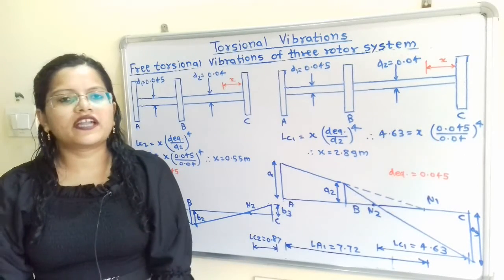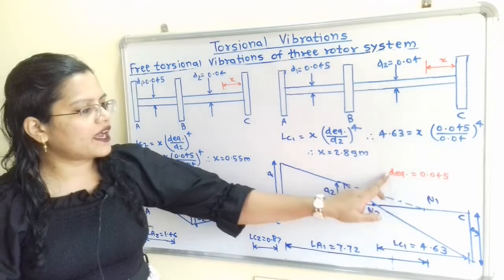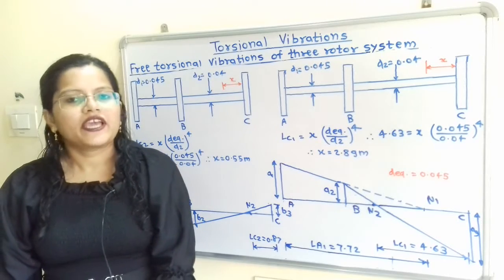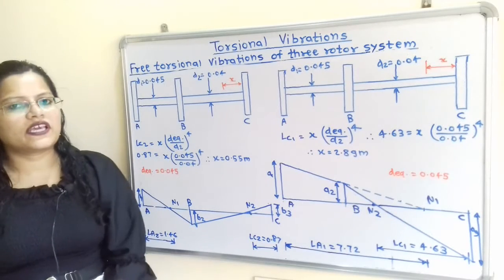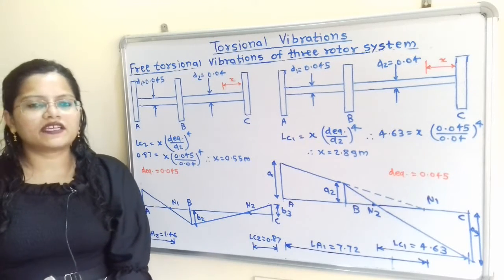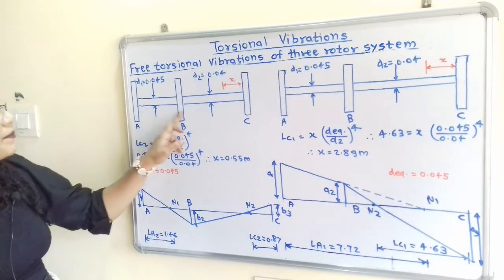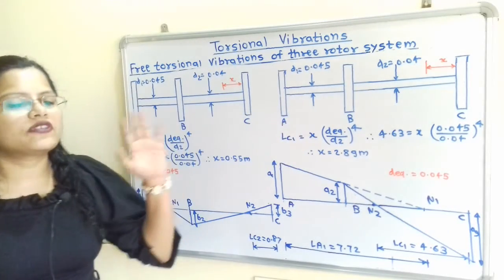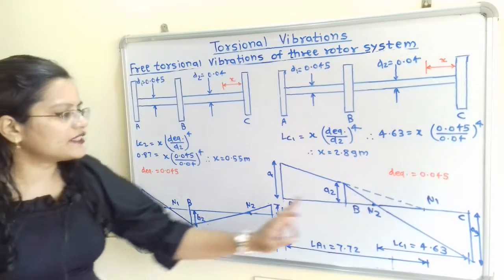The first node position diagram is for the equivalent system and is known as the one-node arrangement, with equivalent diameter 0.045 meter. The second diagram is for the two-node arrangement, also applicable for the equivalent system with equivalent diameter 0.045 meter. As per the question, we now find the position of nodes in the actual system with given diameters D1 and D2.